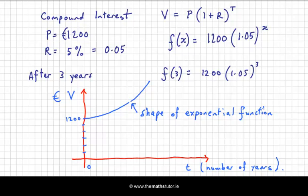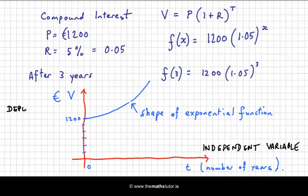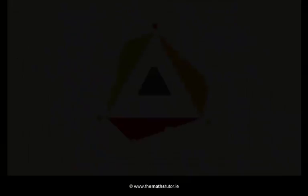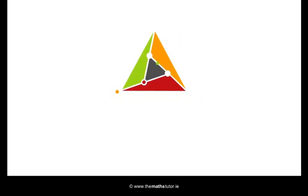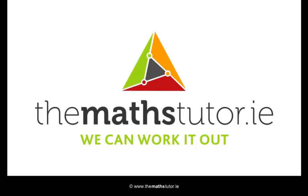So in each of the three cases I've shown you, we have two quantities and one is related to the other. The x-axis is usually given as the independent variable, and the y-axis as the dependent variable. So we have the independent variable on the x-axis and the dependent variable on the y-axis. That concludes this video — thanks for watching, I hope you'll join me for the next one.